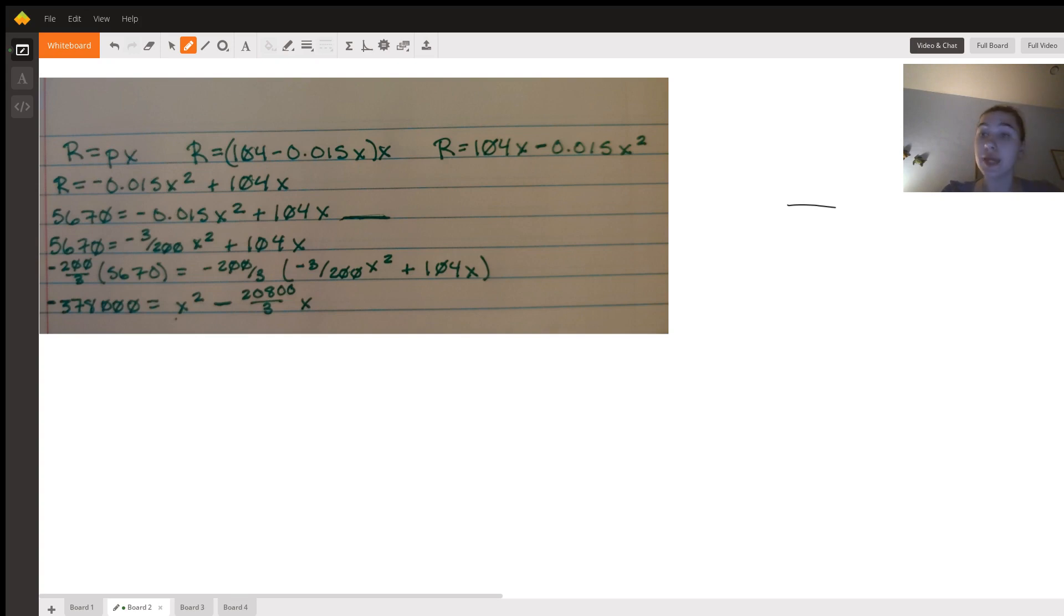And then below, I've just rewritten it in a different order, which is easier for the way we're going to be solving it. And we know what r is. Our revenue that we want to assess for is $5,670. So we can just go ahead and plug it in.